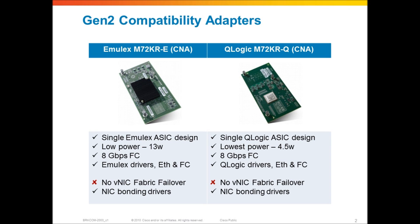Compared to Gen 1, the traditional Fiber Channel chip on the Gen 1 adapters was capable of 4 gigabits of Fiber Channel. The newer Gen 2 adapters in both cases are capable of 8 gigabits of Fiber Channel. That 8 gigabits of Fiber Channel is encoded and encapsulated into Ethernet for FCoE egressing the adapter, and all of that FCoE encapsulation is provided by the same ASIC.